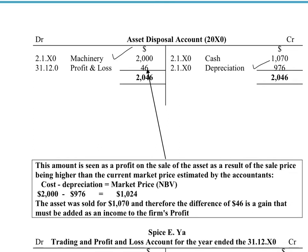Now we need to look at whether we actually gained or lost from the sale. We sold it for $1,070, so we would credit the asset disposal account and debit the cash account because the money is going into the cash T-account. The machine originally cost $2,000, we estimated it would lose $976 in value so it should be worth $1,024, but we sold it for $1,070 — so we actually gained $46, which would be shown as a profit on the credit side of the profit and loss account as an extra income.